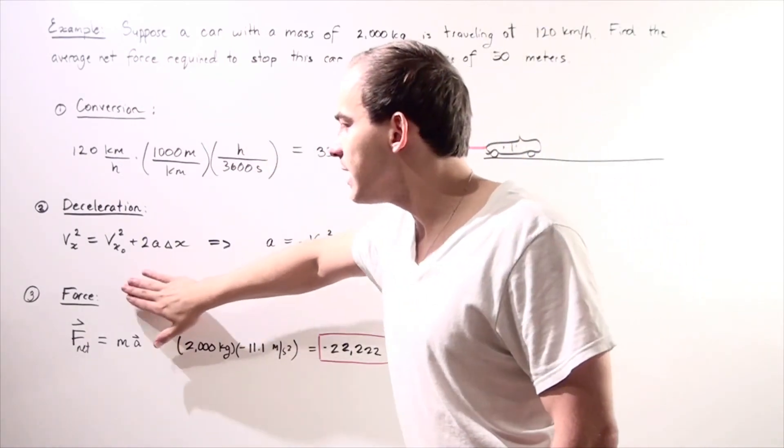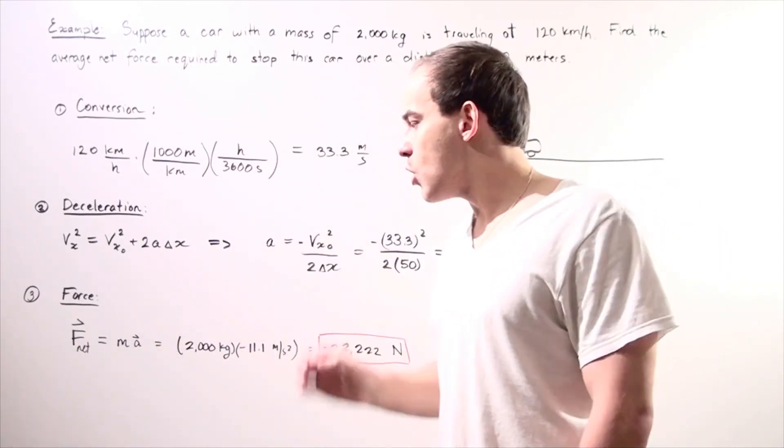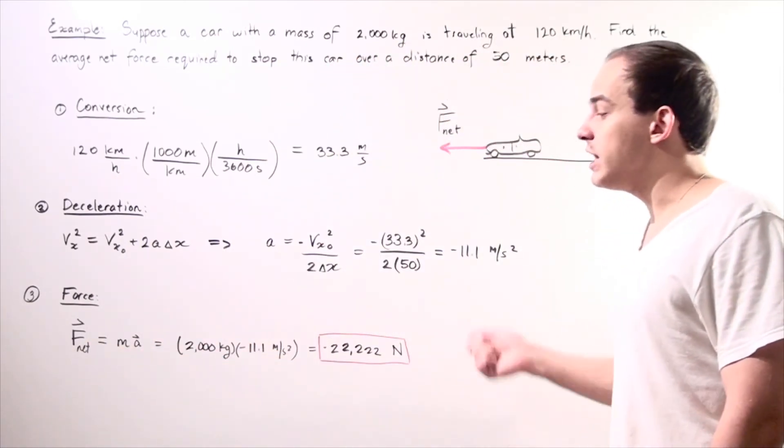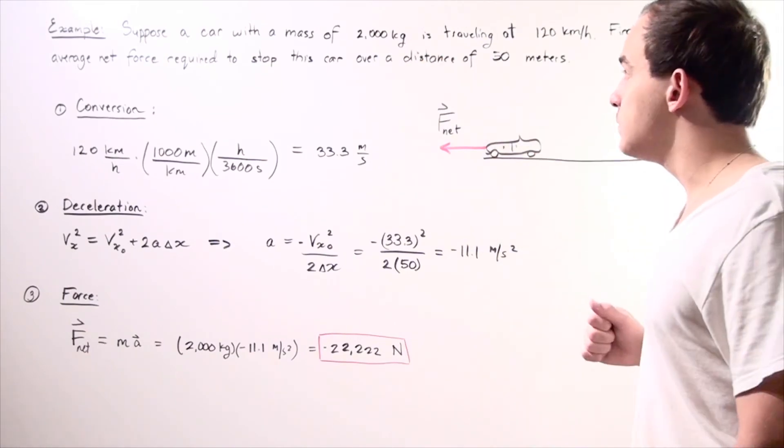So now let's find our net force. So we use our second law of motion. So we have the net force is equal to mass times acceleration. So we know our mass that's given in kilograms.